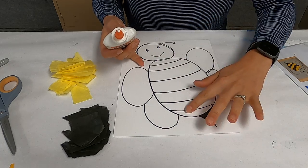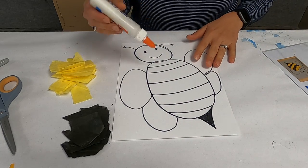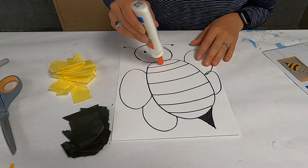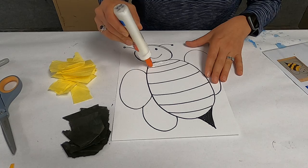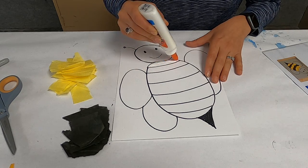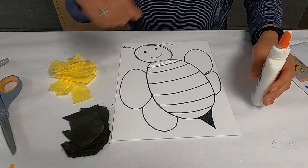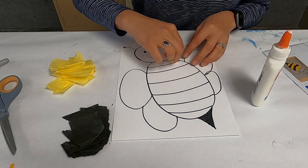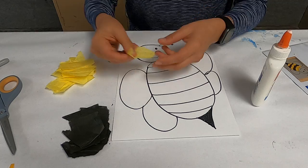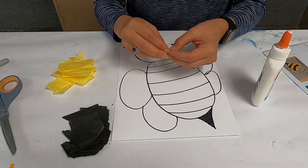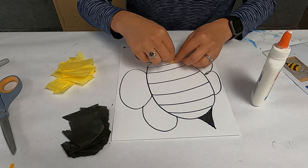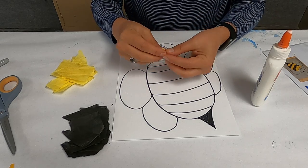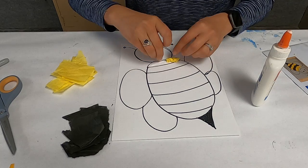So you just start putting glue on your different sections here, and then we'll start placing and gluing in our tissue paper. I'm going to start up here and put yellow up here. So I'm just crumpling like this, and I'm going to stick it to my glue, and you just keep going.